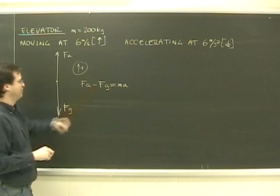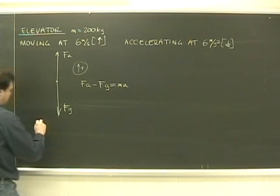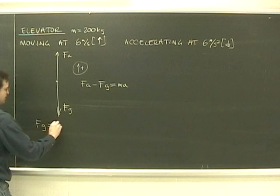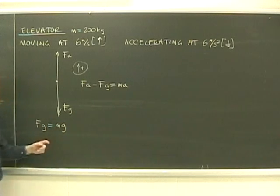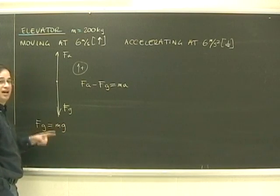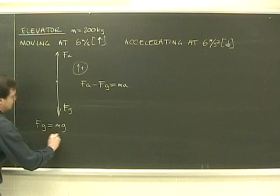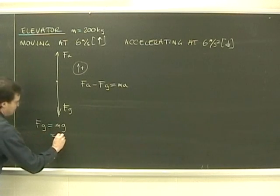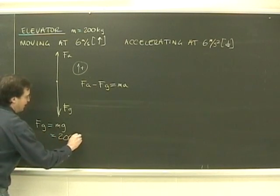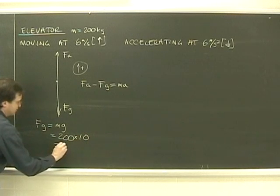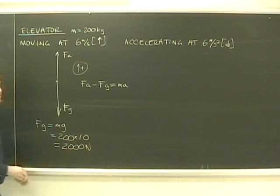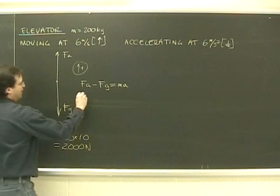So let's try and find FG. In this case, FG is going to be MG. And I'm going to use, for the sake of simplicity, 10 for G instead of 9.8. So my force of gravity, the mass is 200 and gravity is 10. So FG is 2,000 N. So I plug that in.